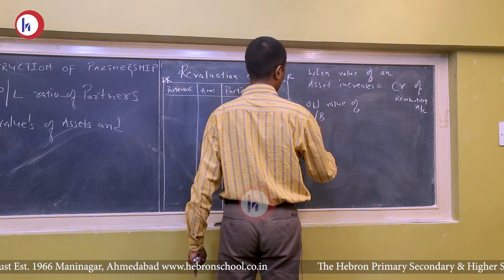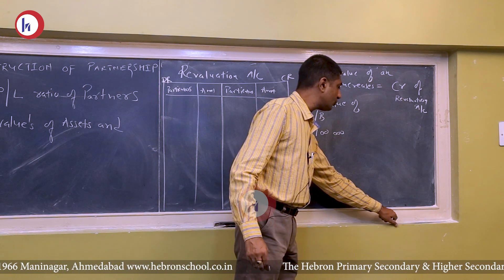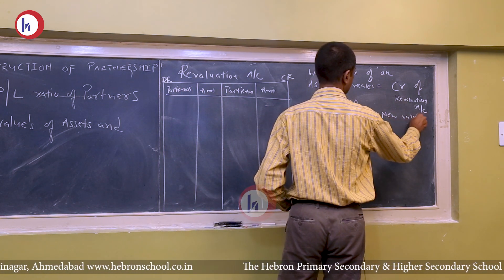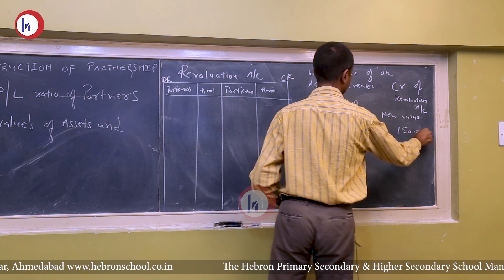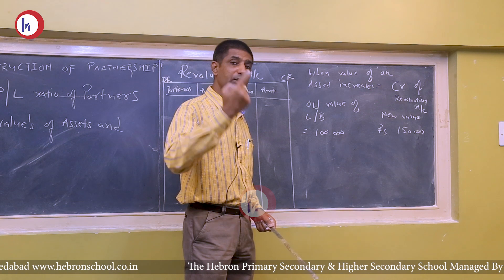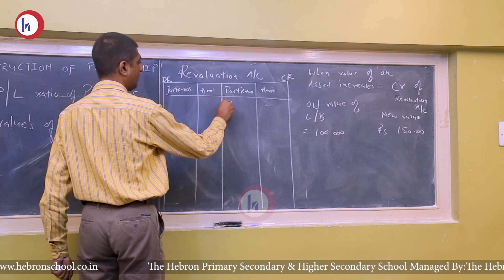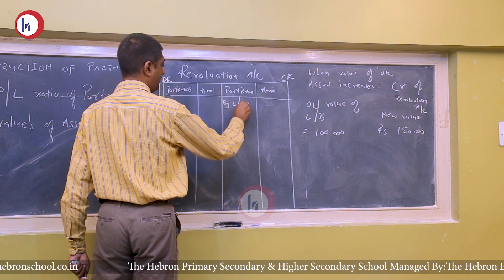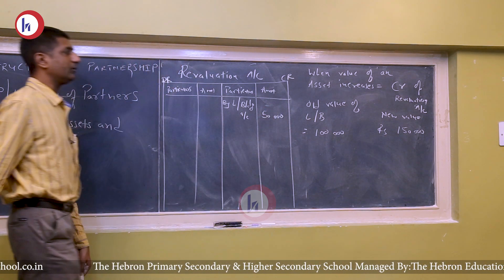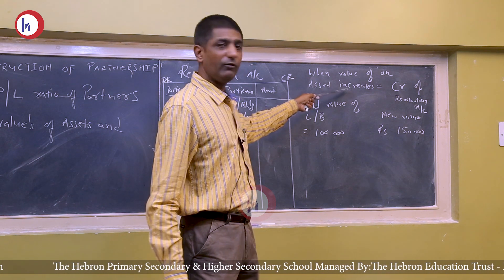Only the difference value is recorded. For example: old value of land and building = ₹1,00,000; new value = ₹1,15,000. There is an increase of ₹15,000 (or ₹50,000 in the earlier example). In the revaluation account, I shall write: By Land and Building Account — ₹50,000 on the credit side.